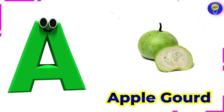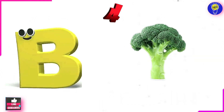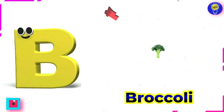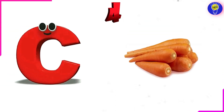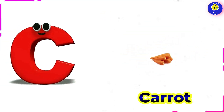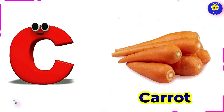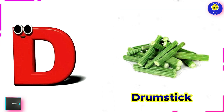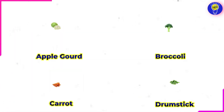A is for apple gourd. B is for broccoli. C is for carrot. D is for drumstick.